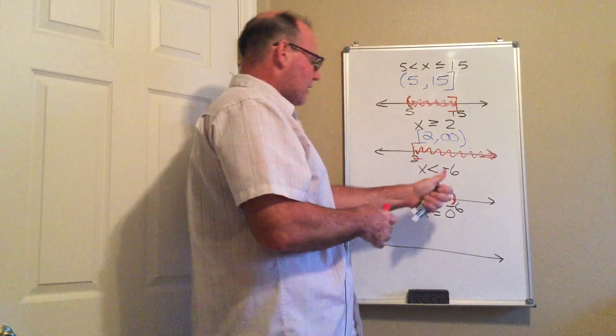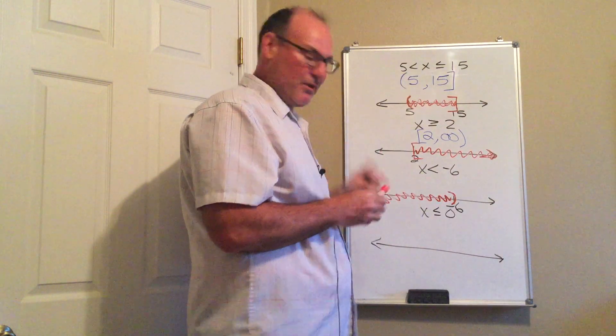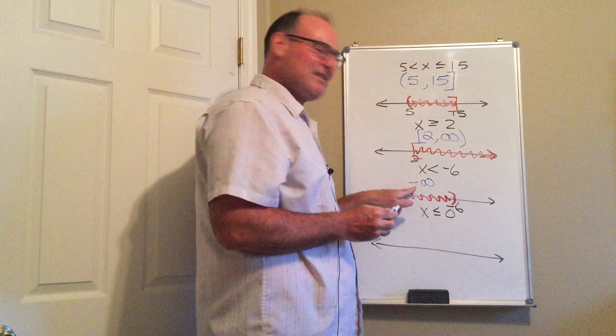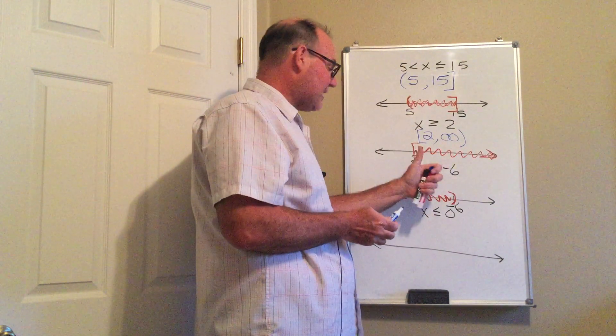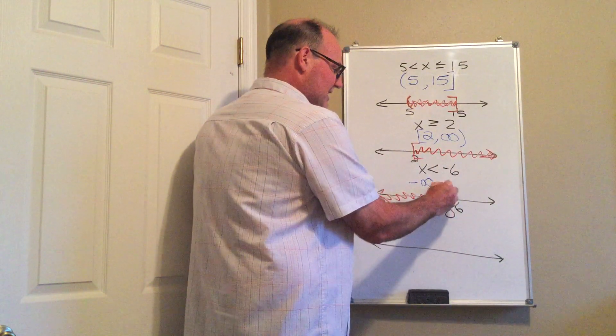Now this time, the number line goes forever to the left without stopping. So what I'm going to do is I'm going to use a negative infinity. The sign is important. When you're telling everybody it's going to the left, you need to put the negative there. The upper bound is the negative 6.